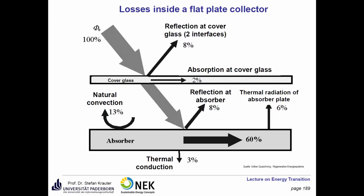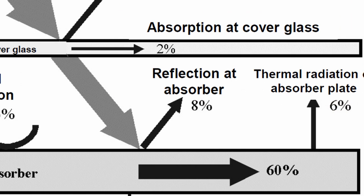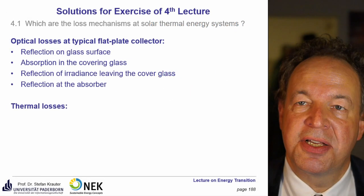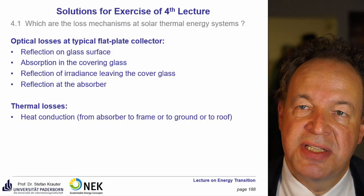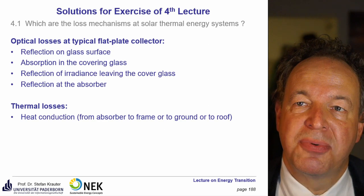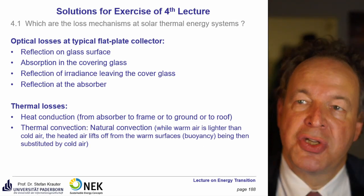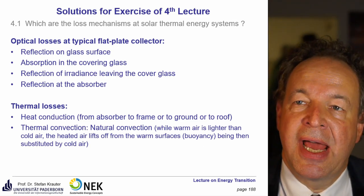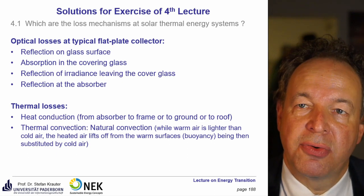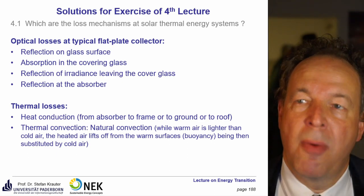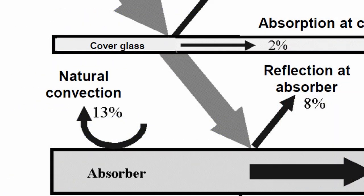You also have non-perfect absorbers, so there is some reflection at the absorber. Then come the thermal losses: heat conduction, where the absorber absorbs a large part of the irradiance but the heat is not entirely transferred to your medium, for example water. Some conduction occurs from the absorber to the frame, ground, or roof. You also have thermal convection — the surrounding air gets heated up, rises due to natural convection, and is substituted by cold air, causing heat losses.